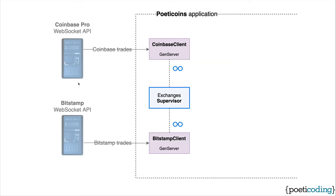The data we need — the trades — come from cryptocurrency exchanges. Each client runs on a GenServer process that manages its own WebSocket connection. All the clients are supervised by the exchanges' supervisor. In this way, if a client crashes, the supervisor restarts the process.